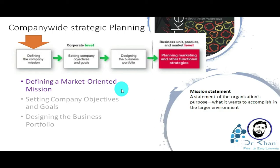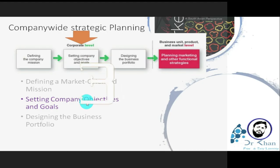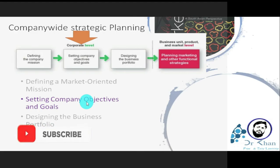Then we have setting company objectives and goals. After defining the overall long-term mission of the organization, the company has to set its objectives and goals. Companies subdivide their mission into annual, semi-annual, or quarterly goals and objectives. These are set on a monthly basis as well, so that the company can work toward the overall mission.